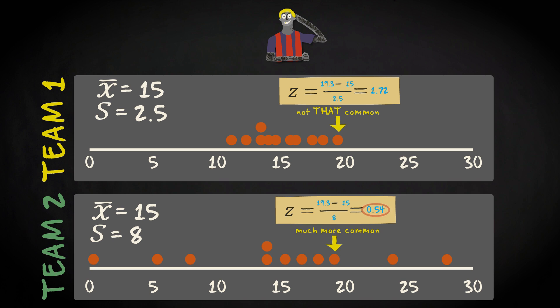In team 2, it is only 0.54 standard deviations removed from the mean. In team 1, it is 1.72 standard deviations removed from the mean.